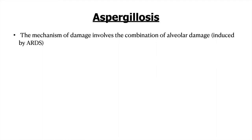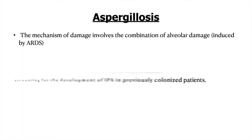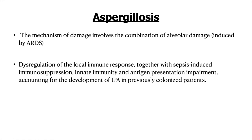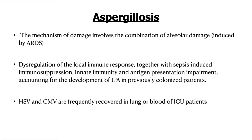Among atypical causes, Aspergillus is an important organism. The mechanism involves combined damage to alveolar cells induced by ARDS, rendering them more vulnerable to Aspergillosis, along with a dysregulated local immune response, sepsis-induced immunosuppression, and innate immunity and antigen presentation impairment — all contributing to invasive pulmonary Aspergillosis in previously colonized patients. Additionally, HSV and CMV are frequently recovered from the lungs and blood of ICU patients, particularly ARDS patients, though their exact implication in pneumonia and their clinical impact in mechanically ventilated patients remain uncertain.